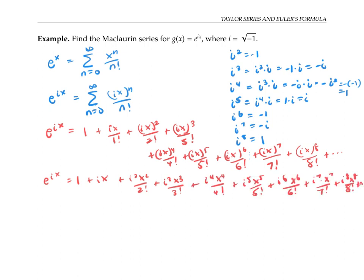Now let's use the patterns we found for powers of i. Since i squared is negative 1, i cubed is negative i, i to the fourth is 1, and so on, we can rewrite this series. So here we are. We've written all our powers of i in terms of 1, i, negative 1, and negative i.